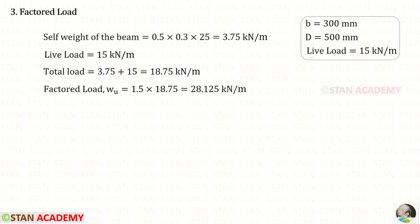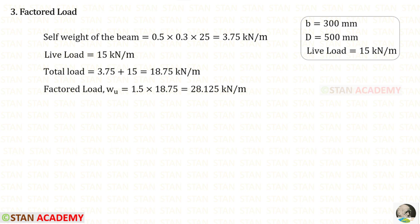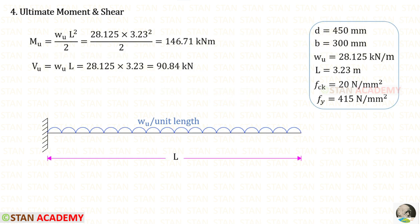We first find the self-weight of the beam. Using a unit weight of concrete of 25 kN/m³, we multiply by the overall depth D (0.5 m) and breadth b (0.3 m), giving 3.75 kN/m. The live load is 15 kN/m, so the total load is 3.75 plus 15, which equals 18.75 kN/m. Multiplying by the load factor of 1.5, the factored load wu is 28.125 kN/m.